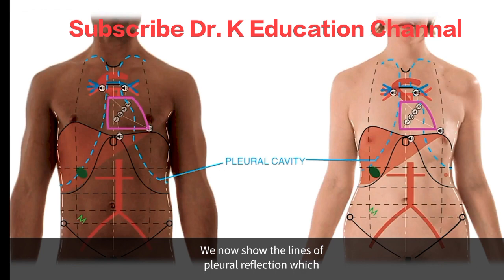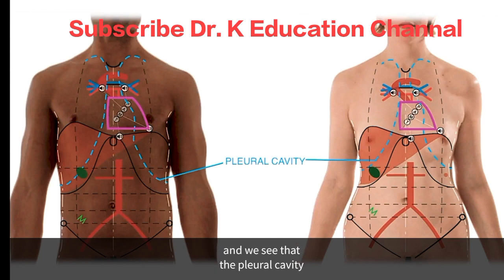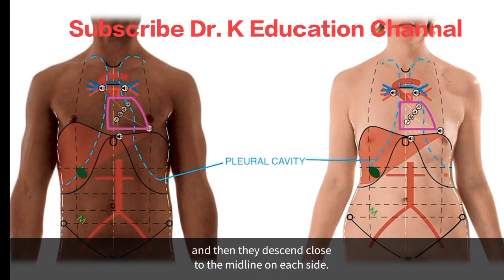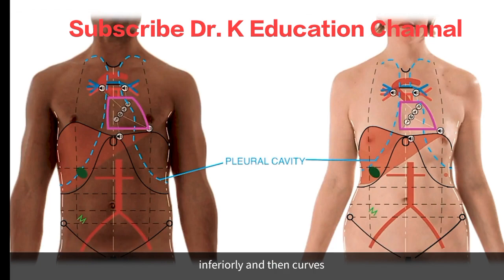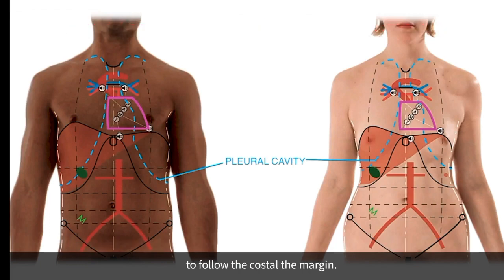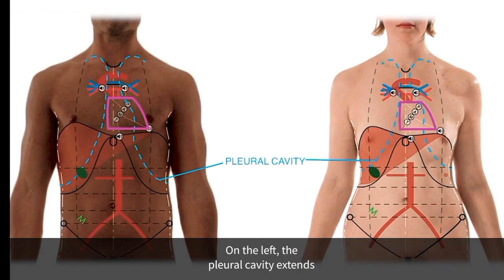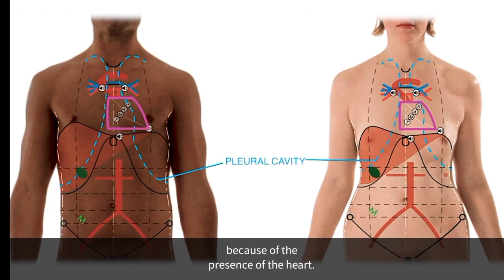We now show the lines of pleural reflection, which indicate the maximum extent of the pleural cavity. The pleural cavity extends superior to the medial third of the clavicle, and then they descend close to the midline on each side. On the right, the pleural cavity descends inferiorly and then curves to follow the costal margin. On the left, it extends inferiorly to about the third rib, where it deviates laterally because of the presence of the heart.